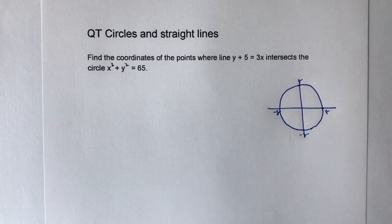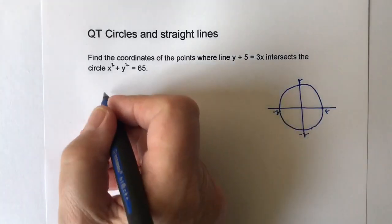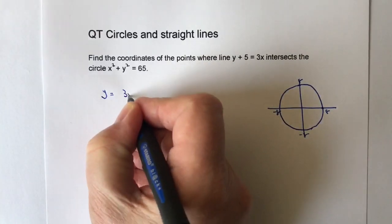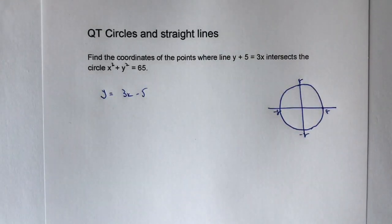Well, if we have a look at that straight line, we've got y plus 5 equals 3x. I'm going to change that to make y the subject. So basically you've got it now in the format of y equals mx plus c.